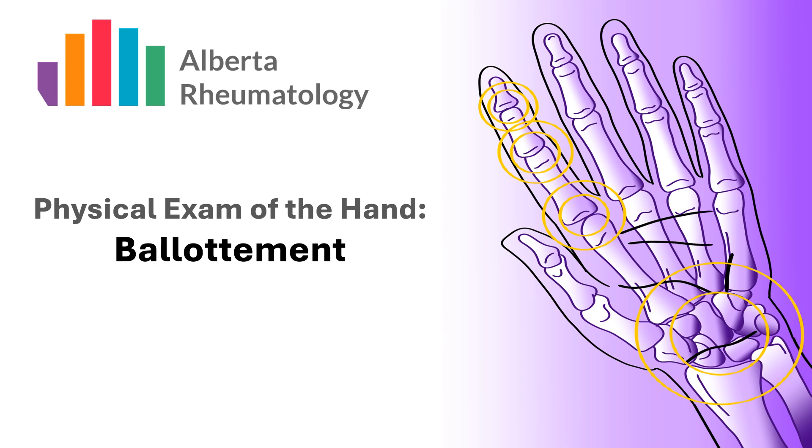Ballotment is a technique that can be used to determine if there is an effusion present in the joints of the wrist, fingers and thumb, which may be due to many different rheumatologic conditions.